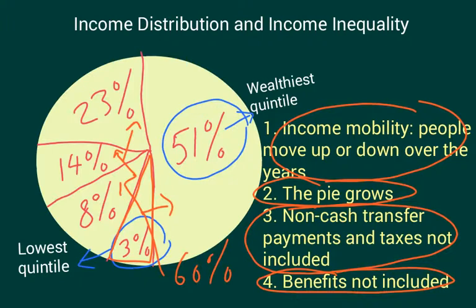So 3% this year is much bigger than 3% decades ago. And on top of all that, as we said, there is income mobility — quite a few people move to a higher quintile over time, improve their earnings, and improve their overall position in the economy.